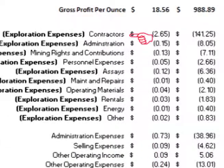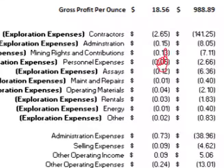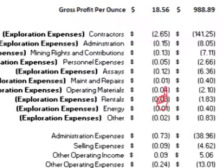There were also exploration expenses of $3.21 per ounce. Breaking that down: contractor costs were $2.65 per ounce; administration costs were $0.15 per ounce; mining rights and contribution costs were $0.13 per ounce; personnel expenses were $0.05 per ounce; assay costs were $0.12 per ounce; maintenance and repair costs were $0.01 per ounce; and operating material costs were $0.04 per ounce.